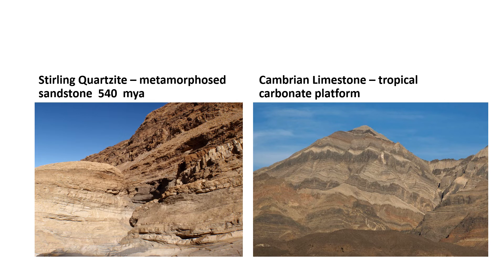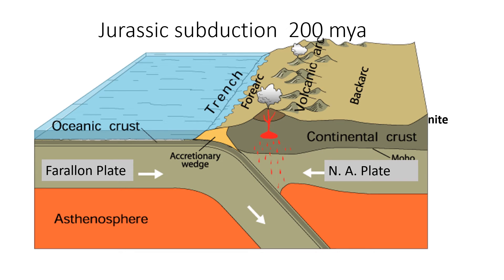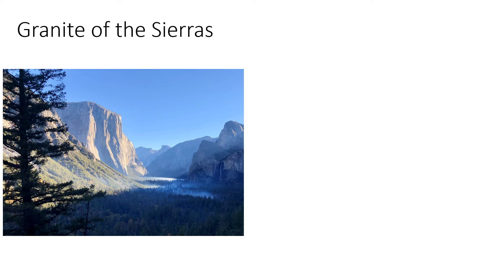If you drive to Death Valley over Towne Pass, you will see mountains of limestone. This carbonate environment persisted for millions of years, all the way to the Mesozoic. During the Mesozoic — specifically the Jurassic, about 200 million years ago — the Farallon Plate was subducting underneath the North American continental plate. The resulting magma that reached the surface created a volcanic arc similar to today's Andes Mountains. The magma that cooled deep underground became granite. When the Sierras were uplifted, the volcanoes eroded away, revealing the granite of the Sierras, such as the granite you see in Yosemite National Park.